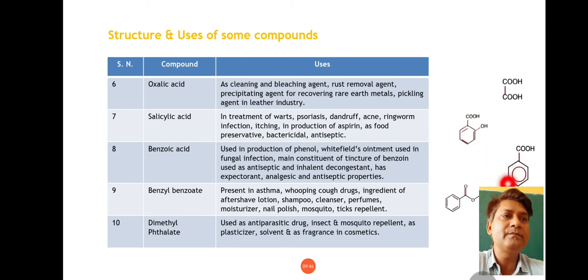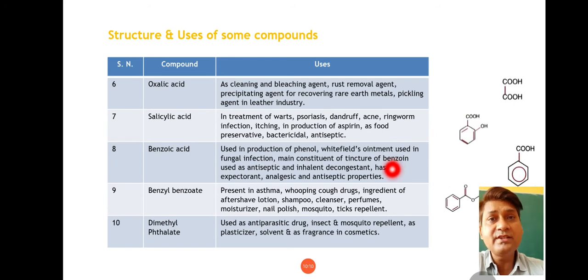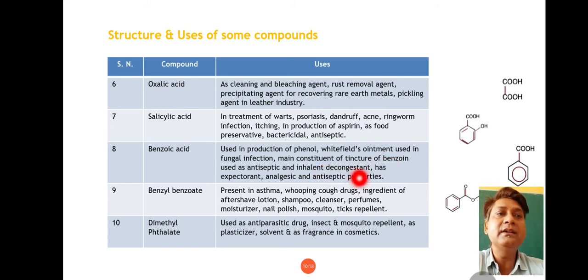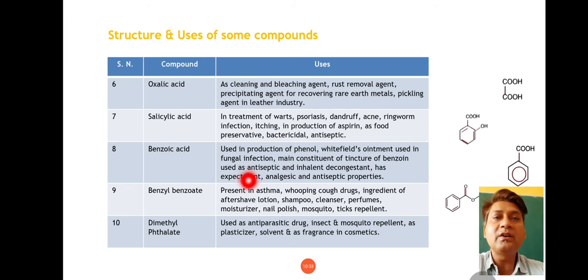Next compound is benzoic acid. Benzoic acid is used in production of phenol, white field ointment used in fungal infections, as main constituent of tincture of benzoin — jo as antiseptic use hota hai — as inhalant decongestant, and it has expectorant, analgesic and antiseptic properties. Analgesic hone se pain mein aur expectorant hone se cough removal mein use hota hai.